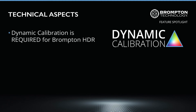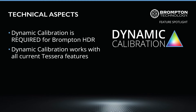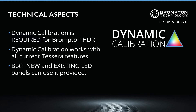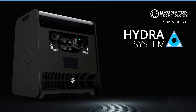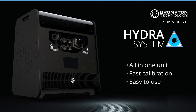Thus, dynamic calibration is required in order to deliver the Brompton HDR experience. Dynamic calibration works together with all the current Tessera features. For LED panels to be dynamically calibrated, they need to meet two requirements. Firstly, they need to be fitted with a Tessera R2 receiver card. Additionally, all R2-enabled LED panels need to be calibrated using our new Hydra system, custom designed for advanced measurements and exclusive to Brompton Technology. For more information about our Hydra system, please visit our website following the link in the description below or contact us directly.